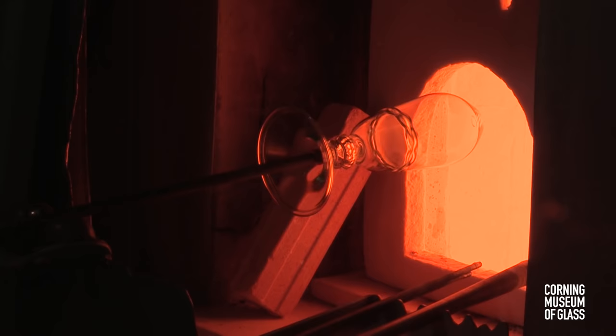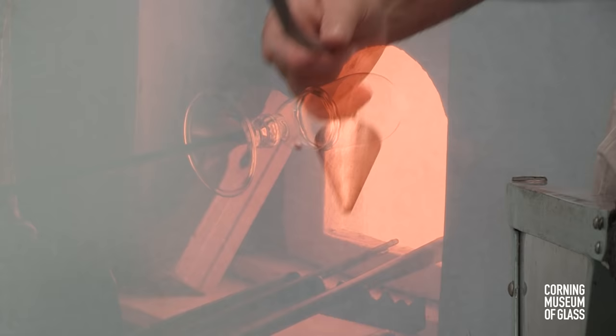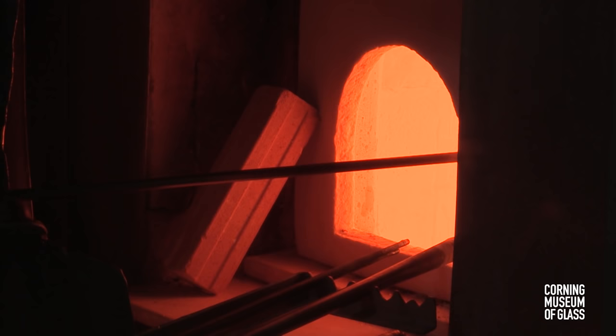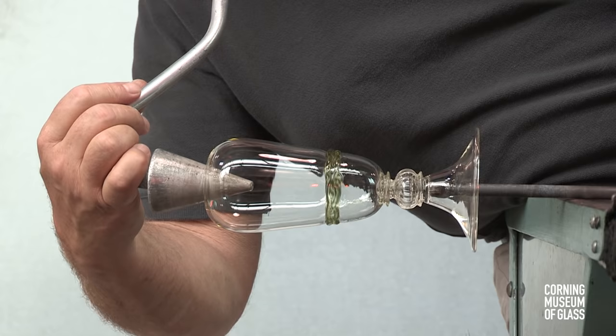The final opening procedure is begun after a reheat. The hole is dilated to about an inch in diameter, reheated, and the soffietta is used to inflate the uppermost part of the vessel body.